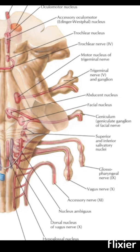The motor nucleus represents the special visceral efferent column, or branchial efferent column. It represents the following nucleus subgroups: a lateral group, an intermediate group, and a medial group.